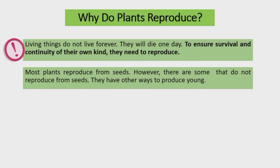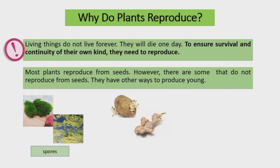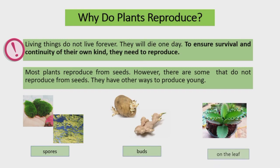Most plants reproduce from seeds. However, there are some that do not reproduce from seeds. They have other ways to produce young: moss and algae reproduce through spores, potato and ginger reproduce through buds, and the bryophyllum plant reproduces on the leaf.